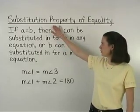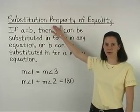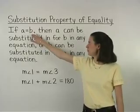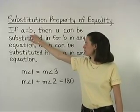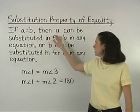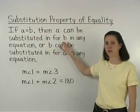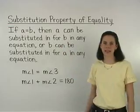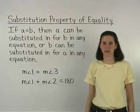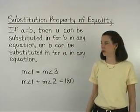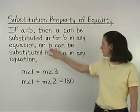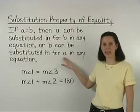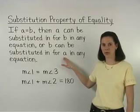The Substitution Property of Equality states that if A equals B, then A can be substituted for B in any equation, or B can be substituted for A in any equation.